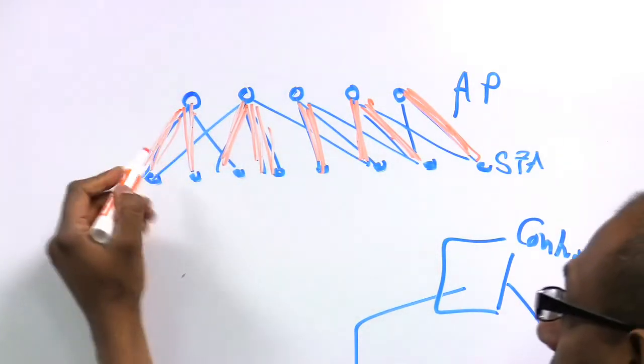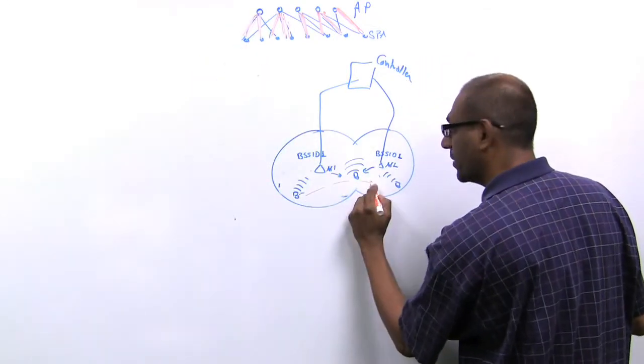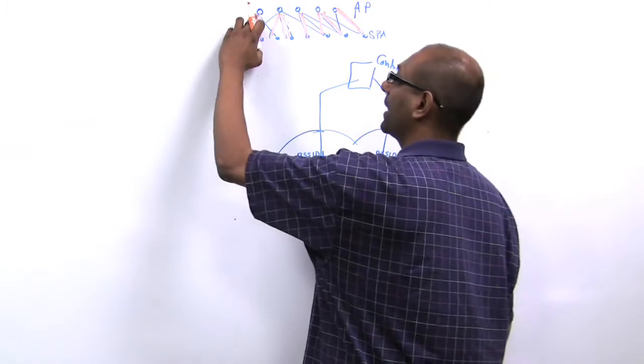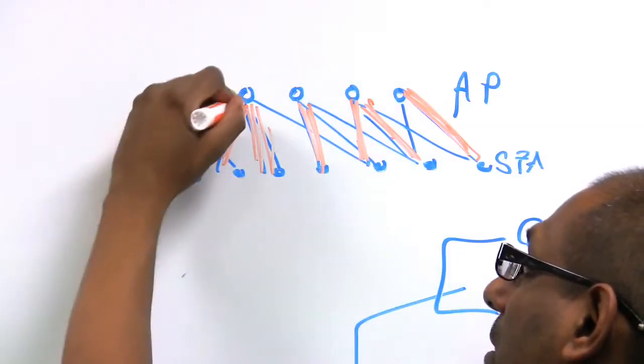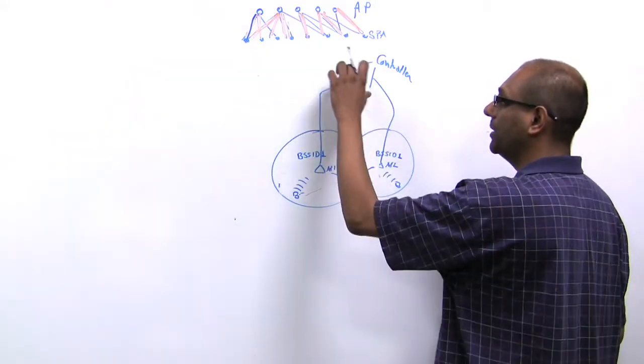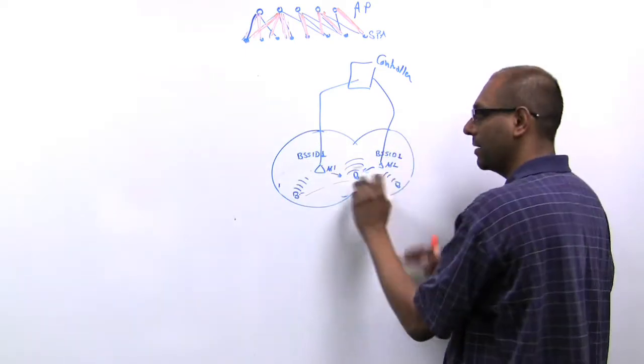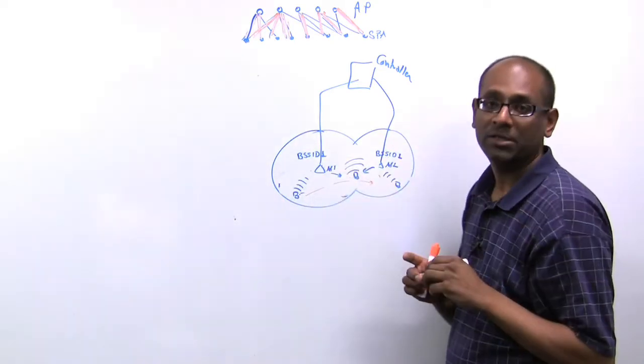Notice that if this link becomes weaker and this link becomes stronger, which is equivalent to a station moving from here to here, the controller can transparently change this assignment. From a client perspective, the BSSID never changed. But in the infrastructure, these routing tables here of this mapping get moved from here to here. And correspondingly, access points know when to acknowledge and forward traffic.